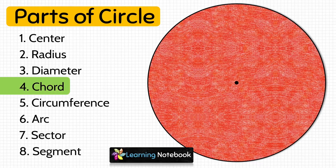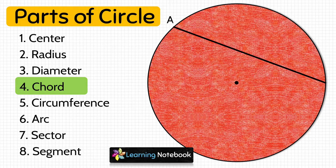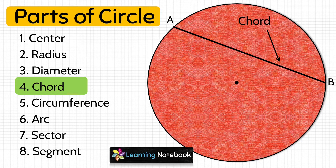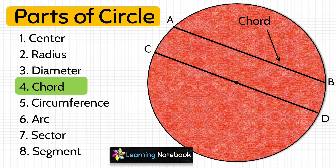The next part of the circle is chord. The line joining any two points on the circle is called the chord of a circle. Here, AB is the chord of this circle. When a chord passes through the center of the circle, it is known as the diameter. So here, CD is the diameter of this circle.